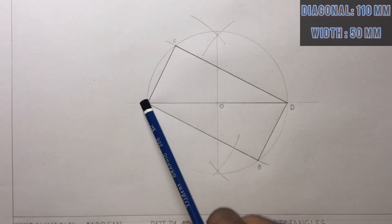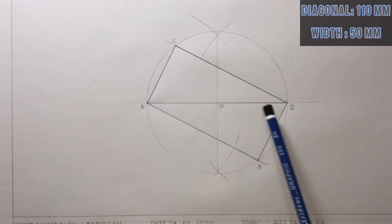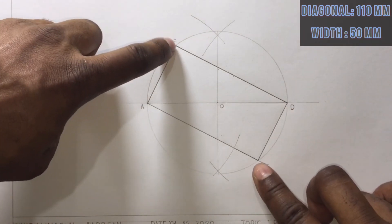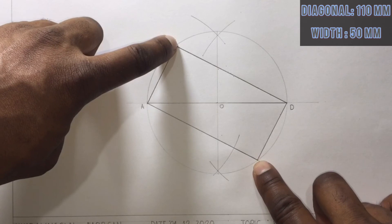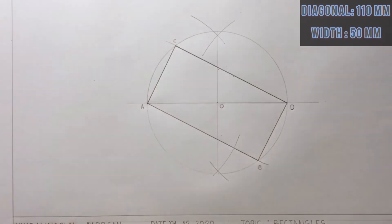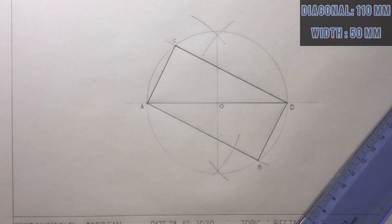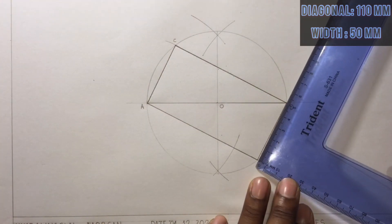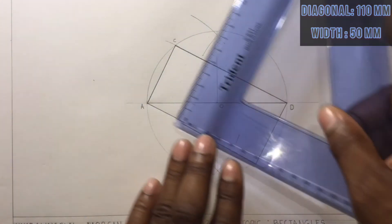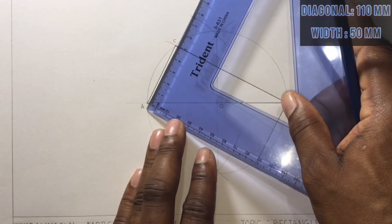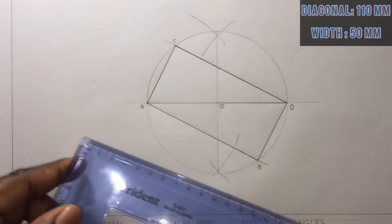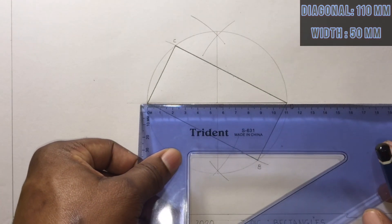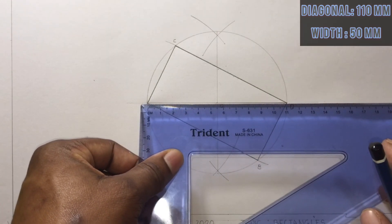Here we can see the diagonal is from A to D. Opposite corners, or the diagonal, could have been from C to B. The rectangle width is 50 and the diagonal given 110 millimeters.